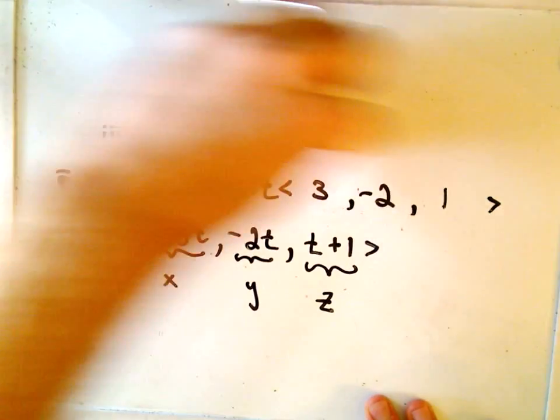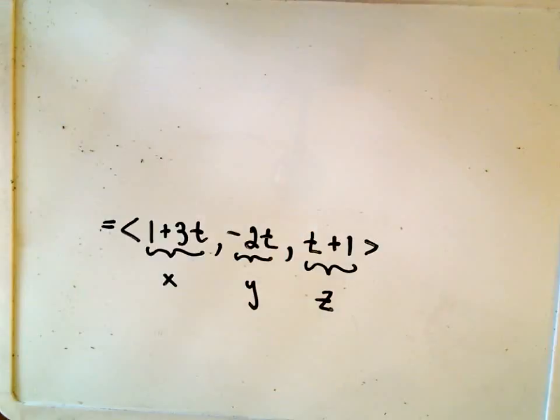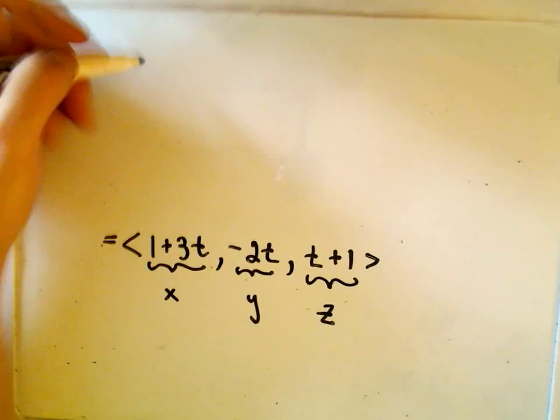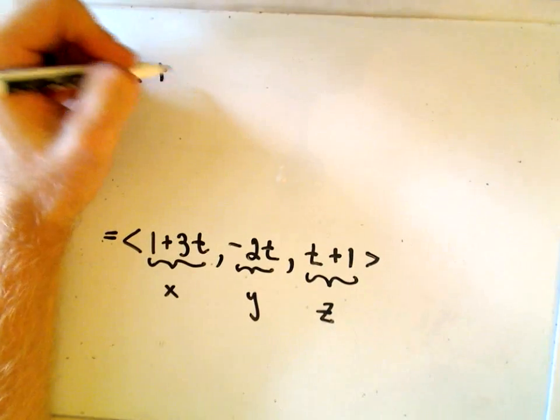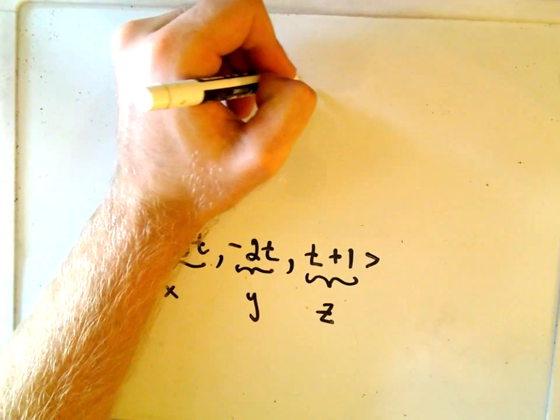Okay, so we've done that. Now we just need to think about our equation of our plane. Well, the equation of the plane that we wanted to intersect was simply x + y + z = 6.